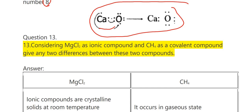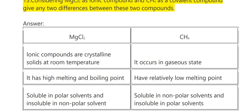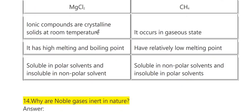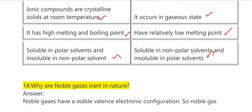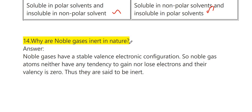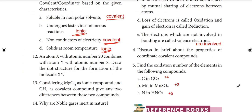Question 13: considering MgCl2 as an ionic compound and CH4 as a covalent compound, give two differences. MgCl2 — ionic compounds are crystalline solids at room temperature with high boiling and melting points, soluble in polar solvents. CH4 — covalent compounds occur in gaseous state with relatively low melting points, soluble in non-polar solvents. Noble gases have a stable valence electronic configuration; their atoms neither gain nor lose electrons, and their valency is zero, hence they are inert.